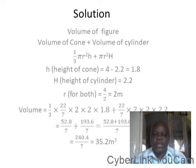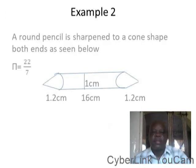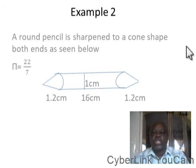If you have any question, don't hesitate to ask. We go to the next question. A round pencil is sharpened to a cone shape at both ends as seen in the figure below. Take π as 22/7. Now take a critical look at this shape.